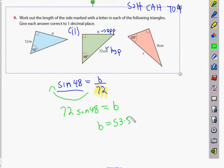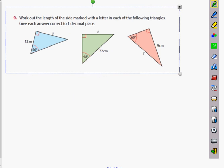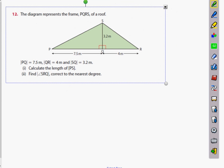And finally, number 12. The diagram represents the frame PQRS of a roof. Now what I always ask is, we need to find what PS is. How many triangles do you see? Three. We only have certain weapons at our disposal, don't we? We have to use right angle triangles. So we have to use Pythagoras theorem or we can use sine, cos, tan.